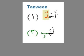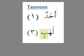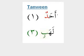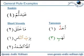For tanween, there are only two cases when it becomes sakin: the dhammatain and the kasratain. The first example is 'ahad' — the dal becomes sakin, you don't read the dhammatain, and you get the qalqala echo. The last example is 'lahab' — the ba carrying the kasratain becomes sakin and effectively becomes an echo letter. That covers the general rule and the most common cases.